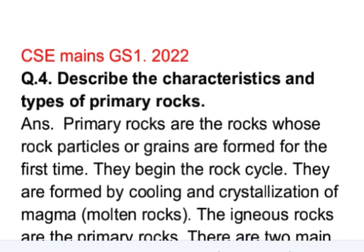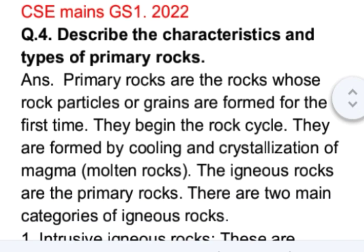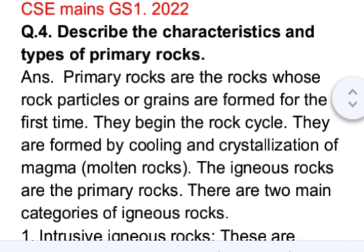Primary rocks are the rocks whose rock particles or grains are formed for the first time. They begin the rock cycle. They are formed by cooling and crystallization of magma, that is molten rocks. The igneous rocks are the primary rocks.